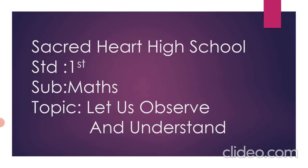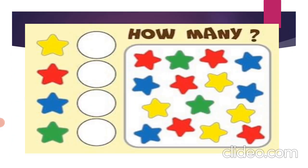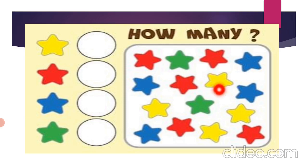So let us see some examples first. Over here there are some stars given. Can you all see? These are the different stars, and over here there is a yellow star given. So come on, let us count how many yellow stars are there: one, two, three, and four. So how many yellow stars are there? Four yellow stars. Very good.